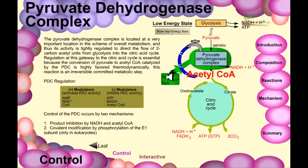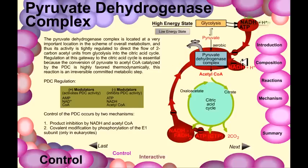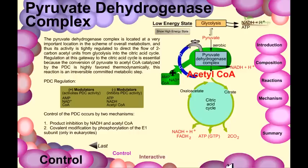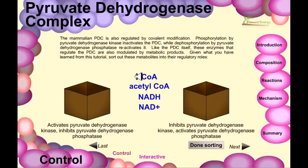AMP, NAD+, and coenzyme A provide positive modulation, while ATP and NADH provide negative modulation. In a high energy state — with high amounts of NADH and ATP — the process of the pyruvate dehydrogenase complex is shut down. In a low energy state, where NADH and ATP are scarce, the cell is forced to generate acetyl-CoA to carry out the citric acid cycle and oxidative phosphorylation to generate energy, so the PDC is activated.